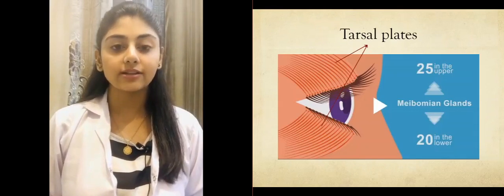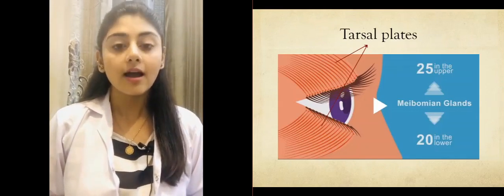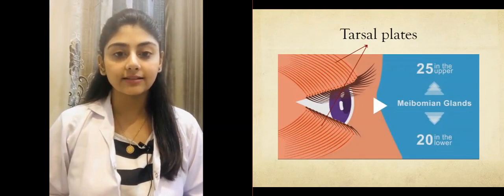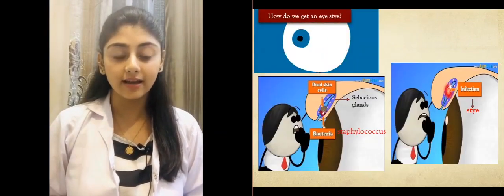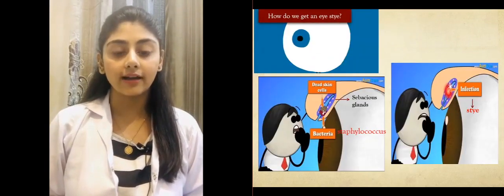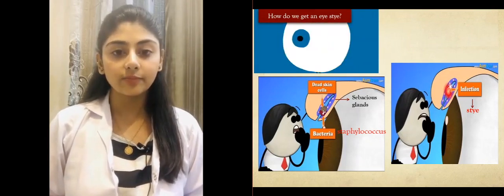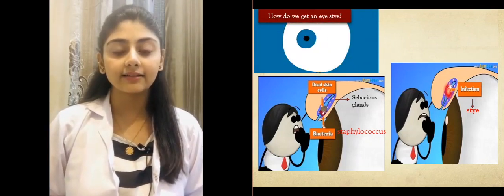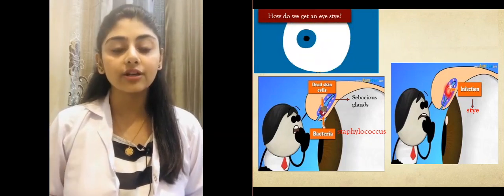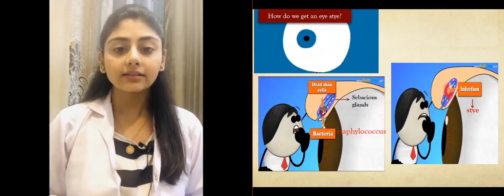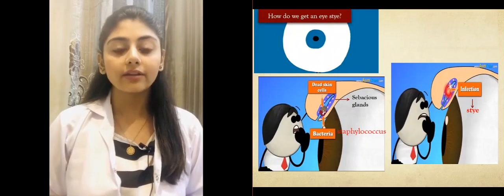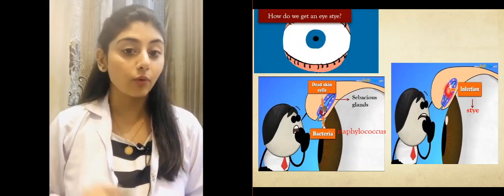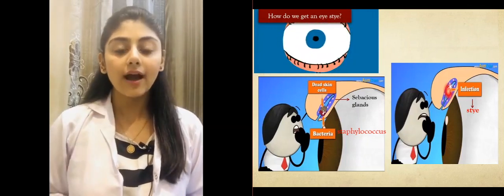What really happens is that staphylococcal bacteria, notorious for causing a stye, live harmlessly on our eyelids. But sometimes dead skin cells along with these bacteria get trapped within these glands, leading to inflammation and giving rise to a stye. A stye is a tender nodule formed either on the upper or lower eyelid, but mostly on the upper eyelid.